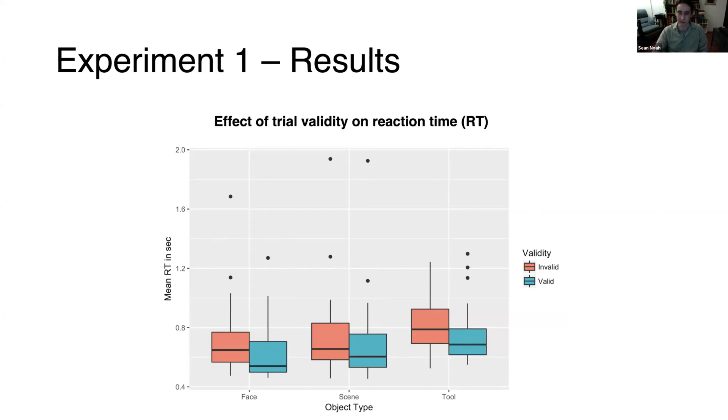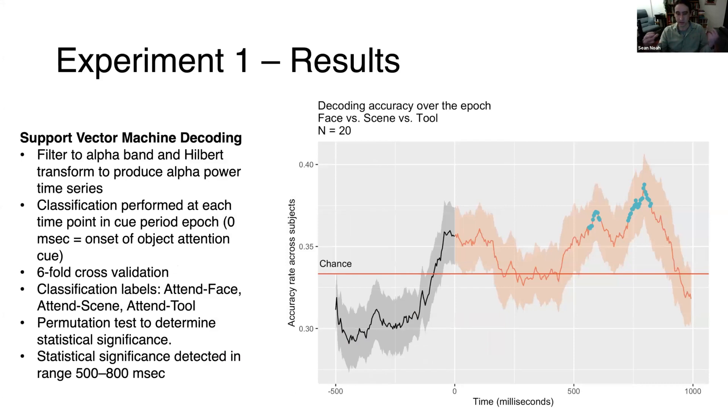In order to assess whether there were differences in scalp-level EEG patterns of alpha power, we use support vector machine decoding because we didn't have any strong hypotheses about what the distributions would look like. This decoding approach is a straightforward way to ask how much information there is about a specific experimental condition in the data. This figure—the gray period is before the cue onset and the orange period is after the cue. This is all before the target presentation, all during this anticipatory phase. Decoding accuracy relative to chance is shown on the vertical, and the blue dots denote the time points that are statistically significant. In these times there are statistically significant differences in alpha power patterns on the scalp between the three object attention conditions.